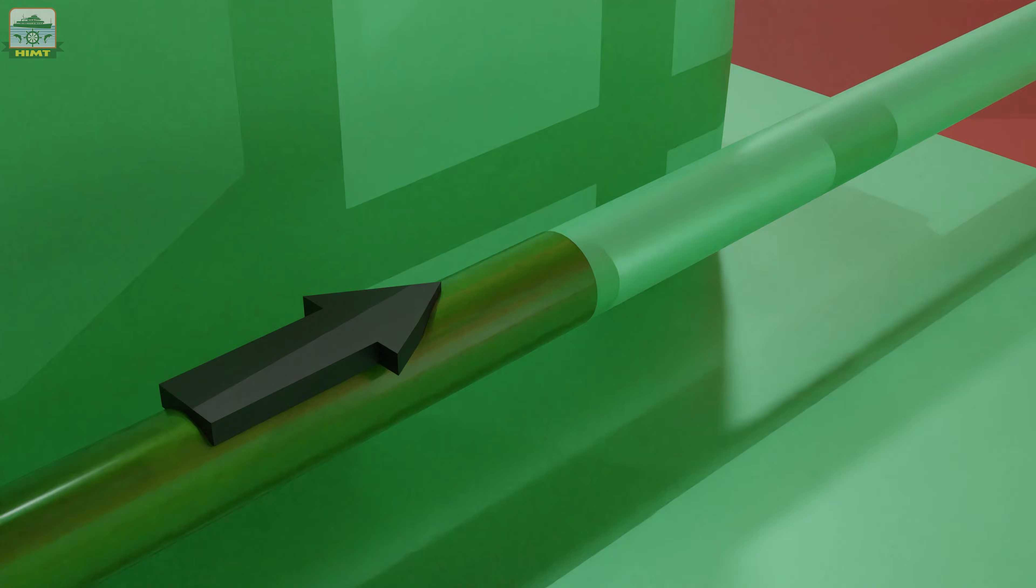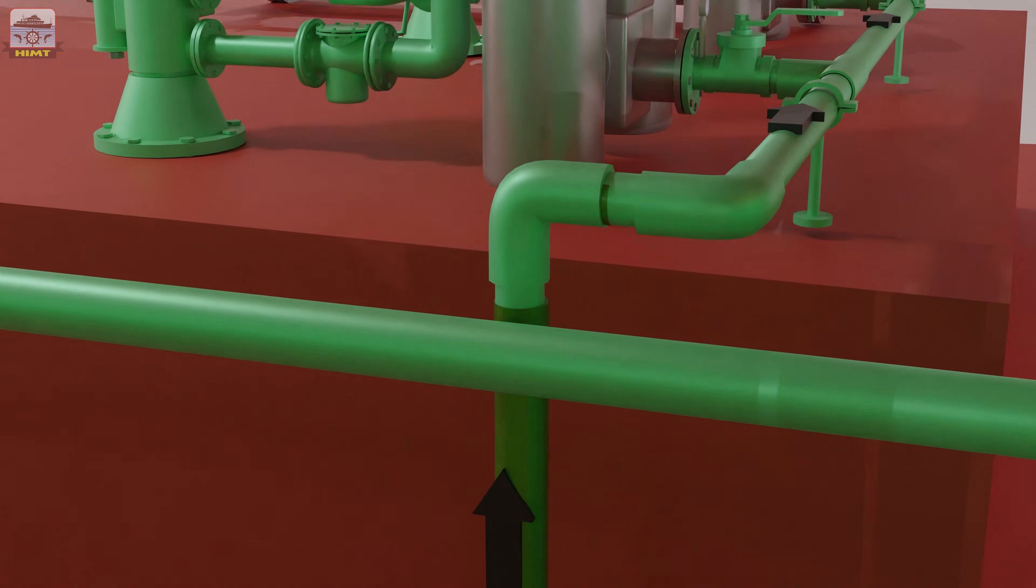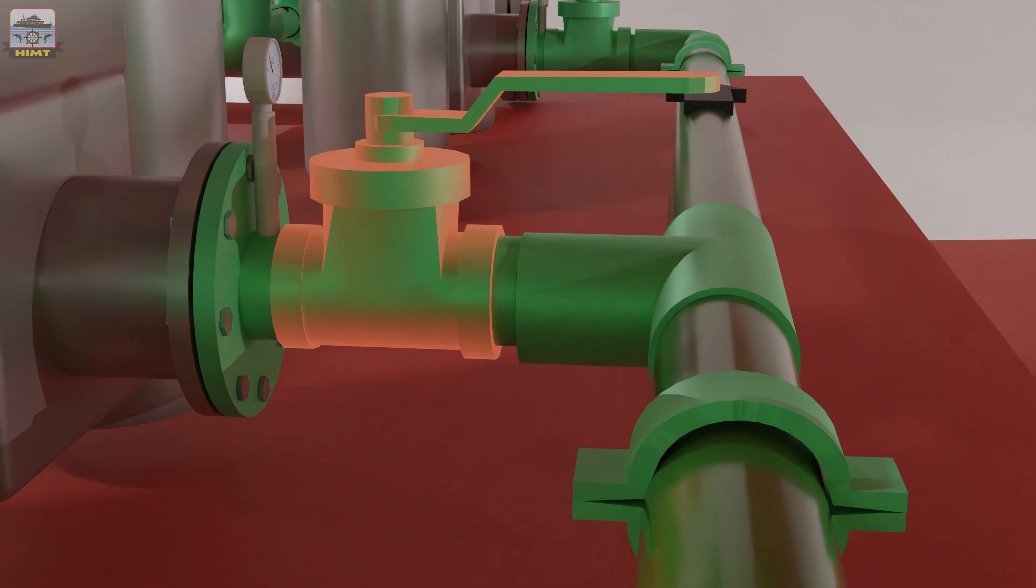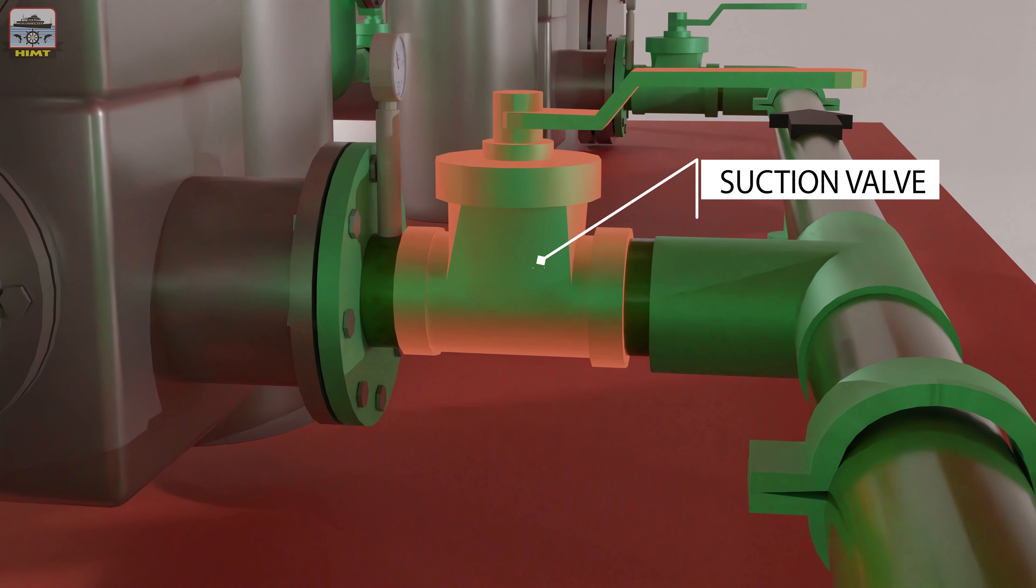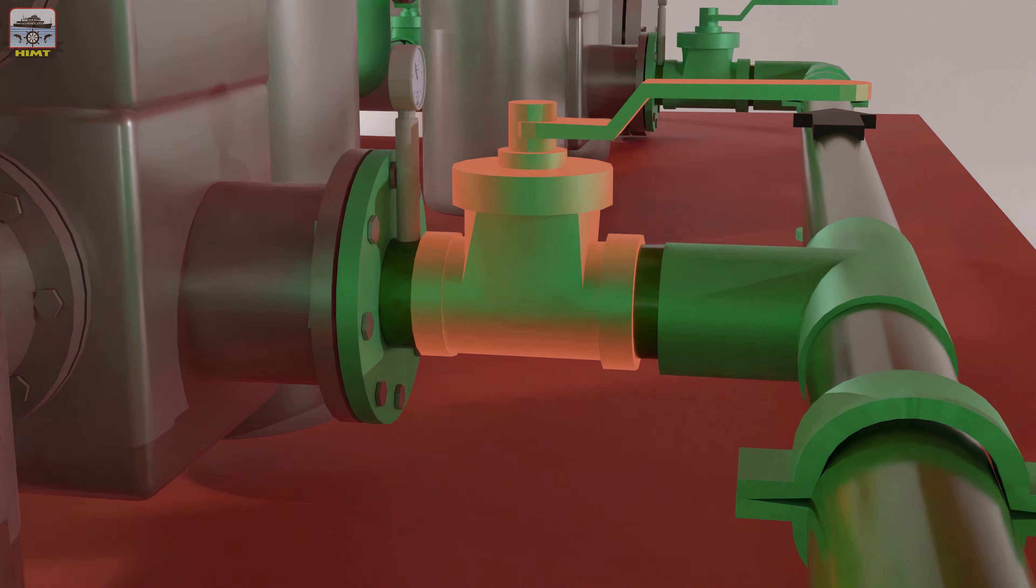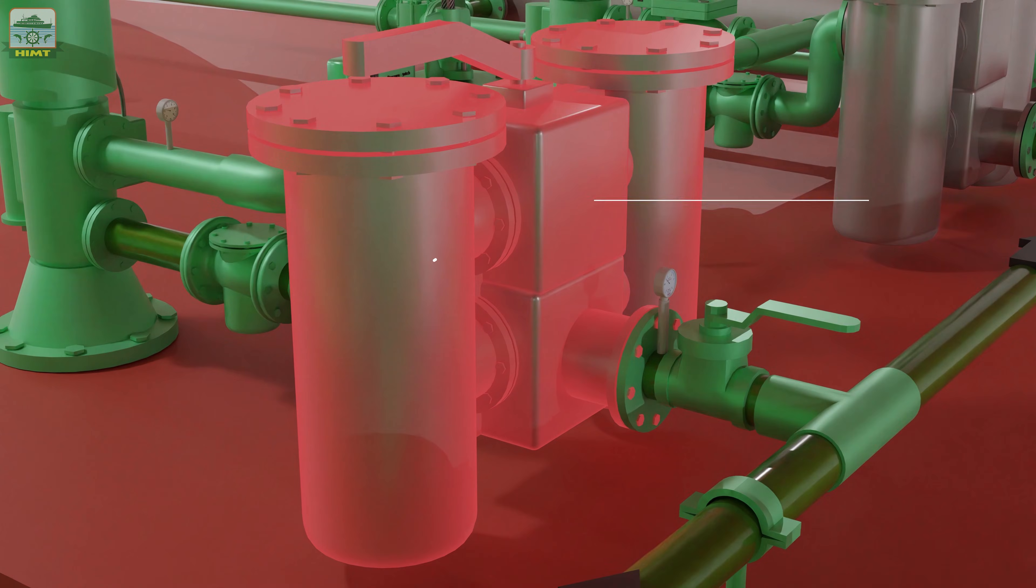The main lube oil pump sucks the oil from the sump via a valve and a duplex strainer fitted at the suction side of the pump. The duplex strainer filters coarse particles to protect the pump.